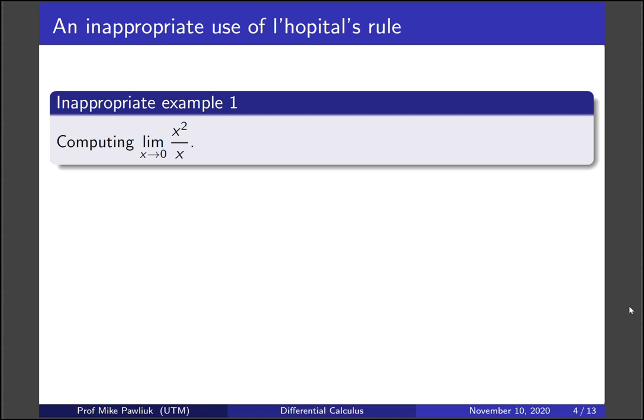So let's look at what we mean by inappropriate use of L'Hopital's rule. Let's consider the limit as x goes to 0 of x squared over x. How would you solve this limit if you had to? Let's look at how we could use L'Hopital's rule on it. We notice that this is a limit of the form 0 over 0. When we take the derivative, the derivative of the top is 2x, and the derivative of the bottom is just 1. So this is really the limit of 2x, which is 0.